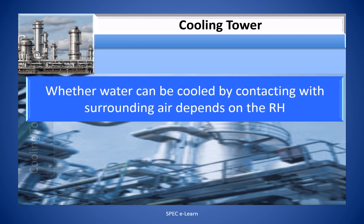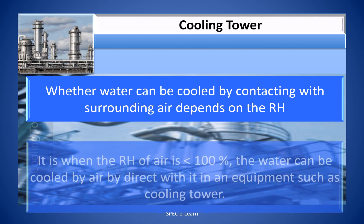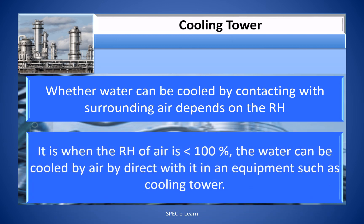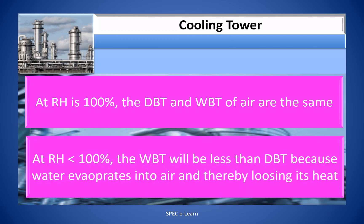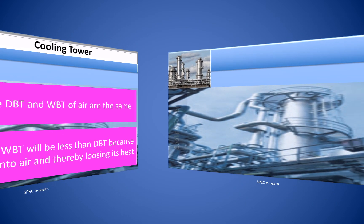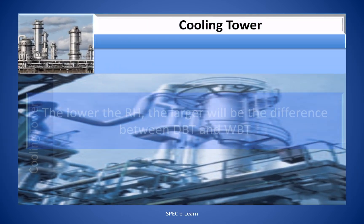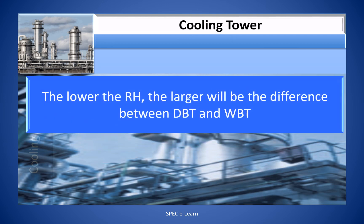Whether water can be cooled by contacting with surrounding air depends on the relative humidity. It is when RH is less than 100% that water can be cooled by direct contact with air in equipment such as a cooling tower. At RH equal to 100%, DBT and WBT of air are the same. At RH less than 100%, WBT will be less than DBT because water evaporates into the air, losing heat. The lower the RH, the larger the difference between DBT and WBT.